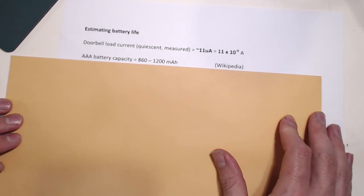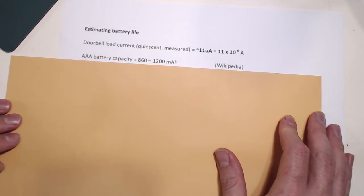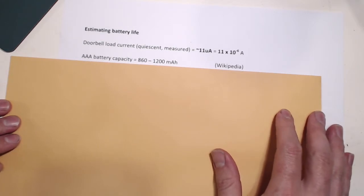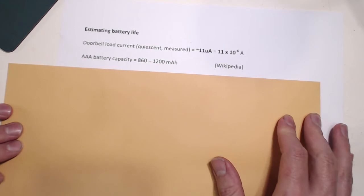Well, we're using three AAA batteries and according to Wikipedia at least, these have a capacity of about 860 to 1200 milliamp hours, depending on the quality of the cell and the brand and so on and so forth.